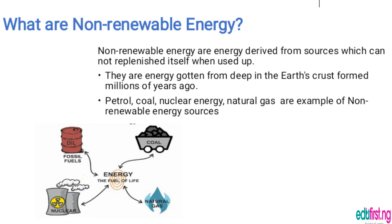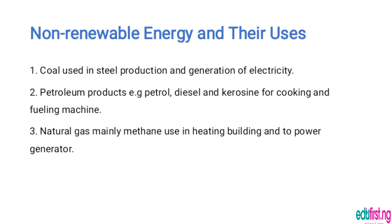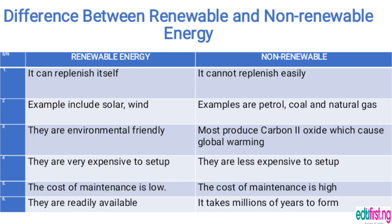Non-renewable energy and their uses: coal is used in steel production and generation of electricity, while petroleum products — that is, petrol, diesel, and kerosene — are used for cooking and fueling machines such as generators and vehicles. Natural gas, mainly methane, is used in heating buildings and to power generators.